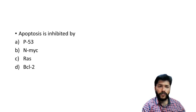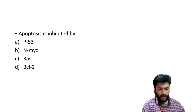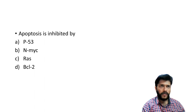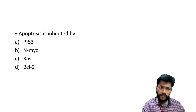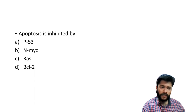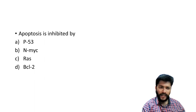Next question: apoptosis is inhibited by. There's the concept of pro-apoptotic and anti-apoptotic genes. Anti-apoptotic proteins are BCL-2, MCL-1, and BCL-XL — all anti-apoptotic genes. BAK and BAX are pro-apoptotic genes — remember BAX and BAK as something bad, so pro-apoptotic. BCL-2, MCL-1, BCL-XL are anti-apoptotic. The answer is D — BCL-2 inhibits apoptosis.